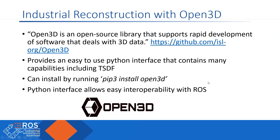So let's introduce Open3D. Open3D is an open source library that supports rapid development of software that deals with 3D data. It provides an easy-to-use Python interface with many capabilities, including the previously mentioned TSDF. It's easily installed just by running a pip install command — no other dependencies required, ready to go right out of the box. And since it has a Python interface, it can easily interact with ROS, which is very handy for us.